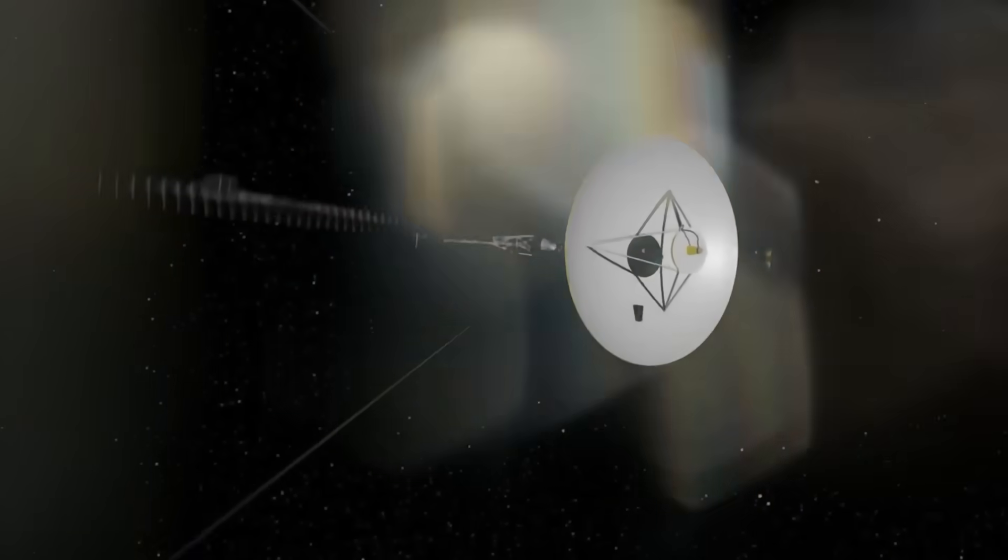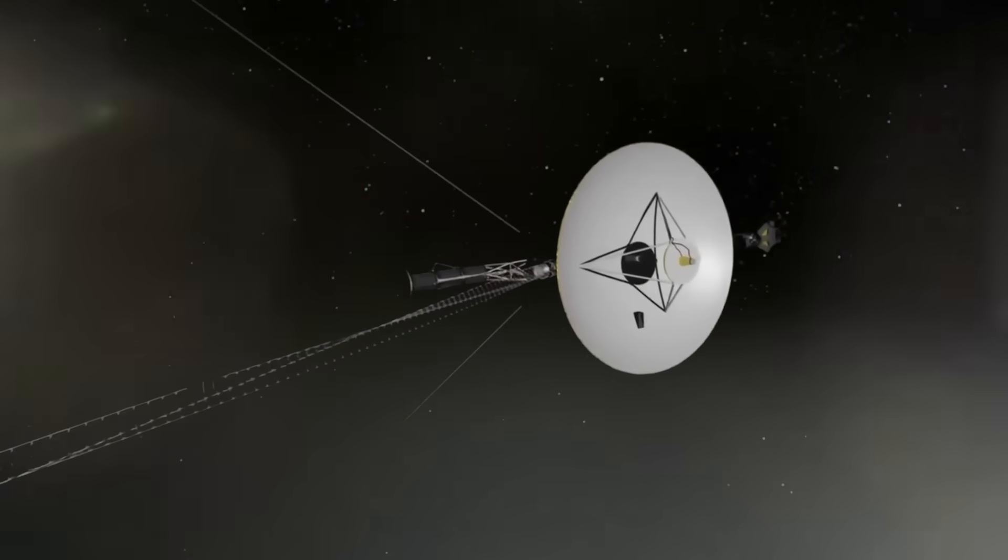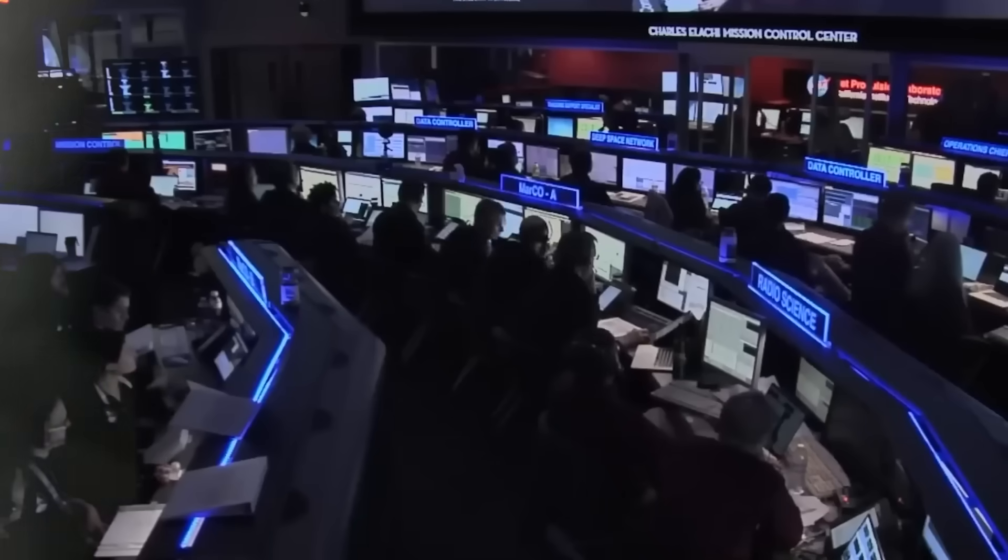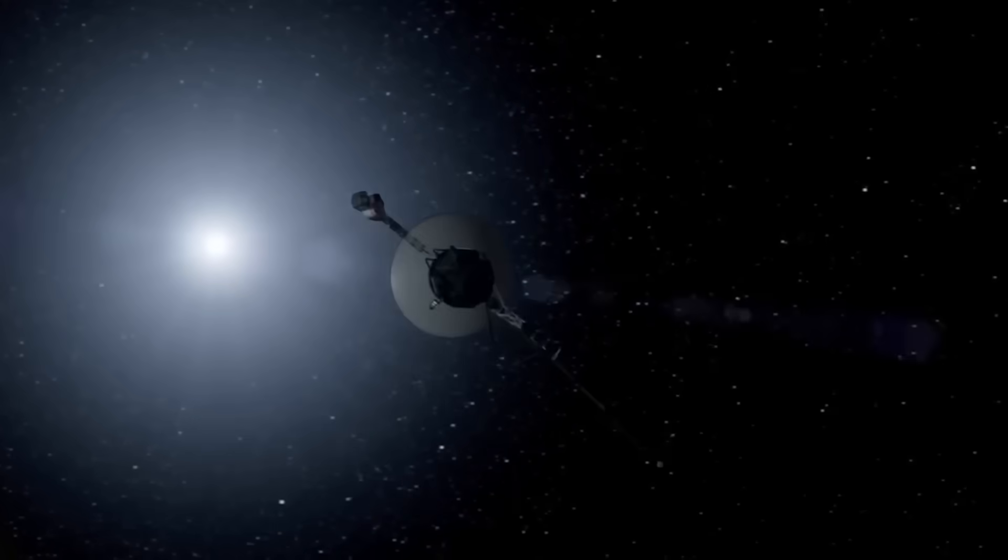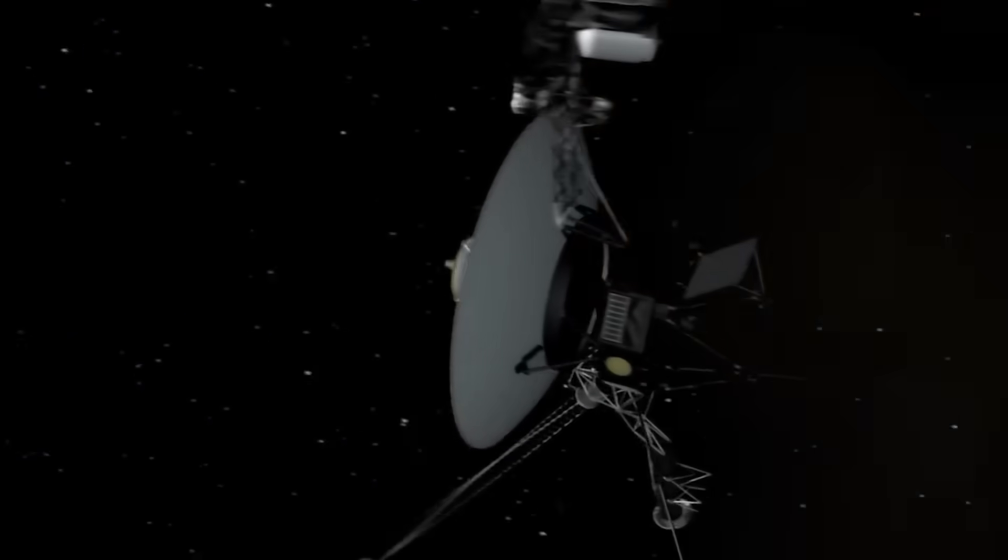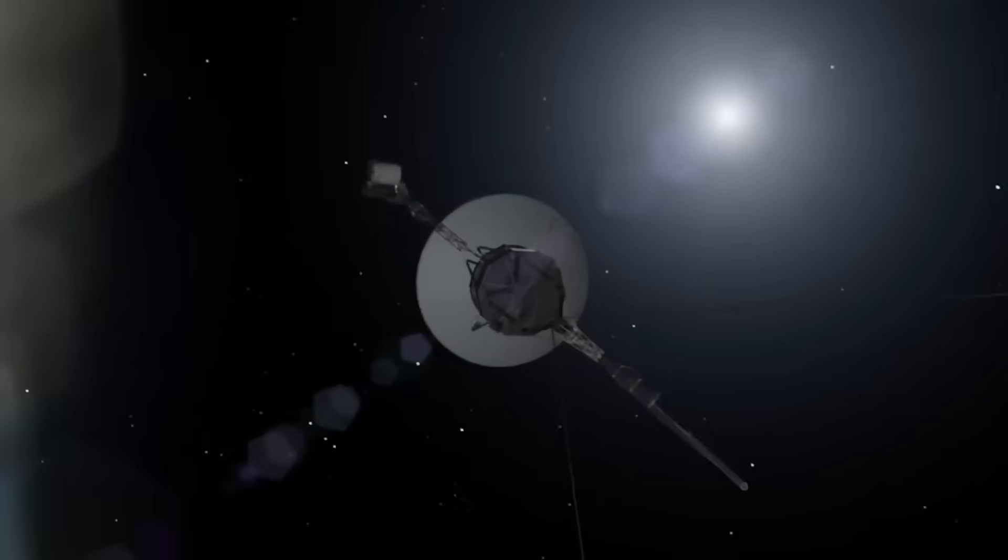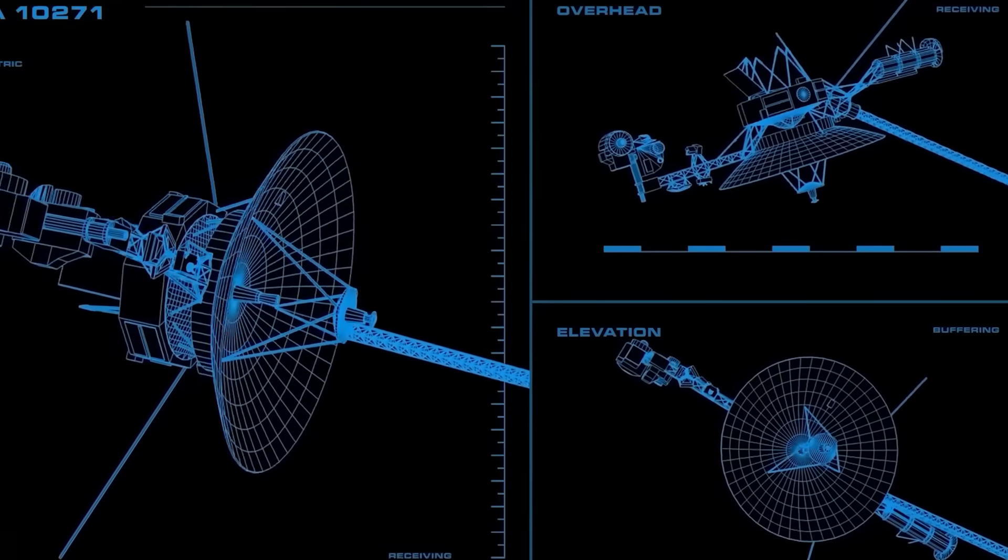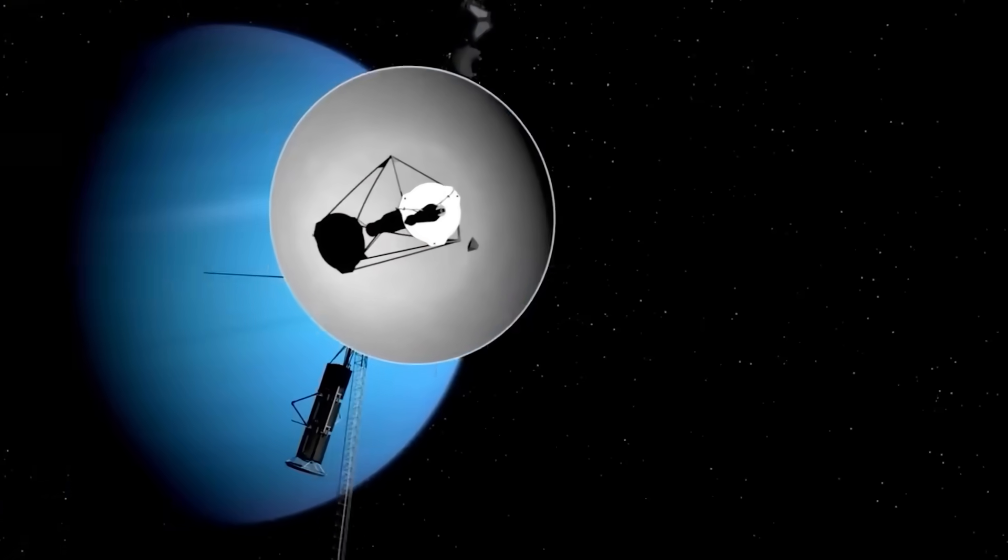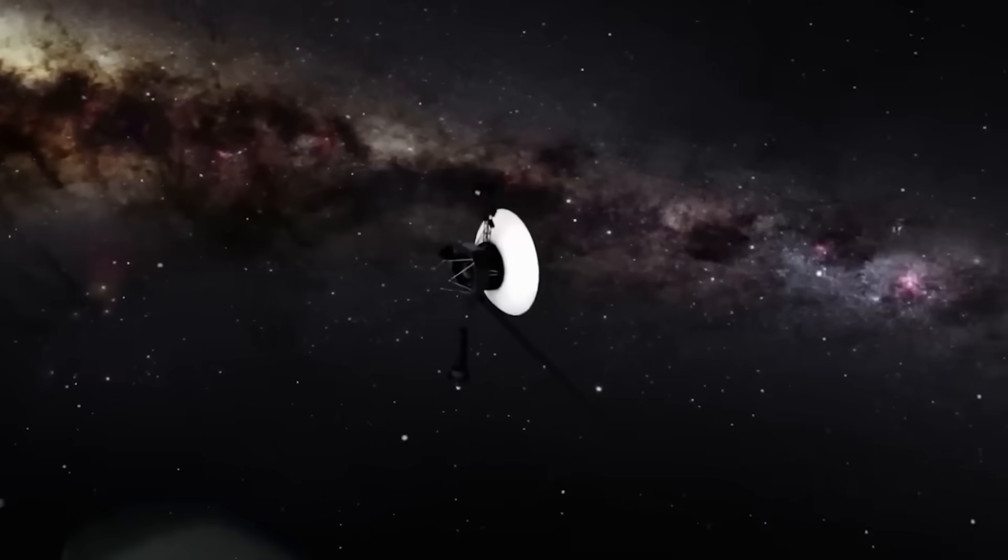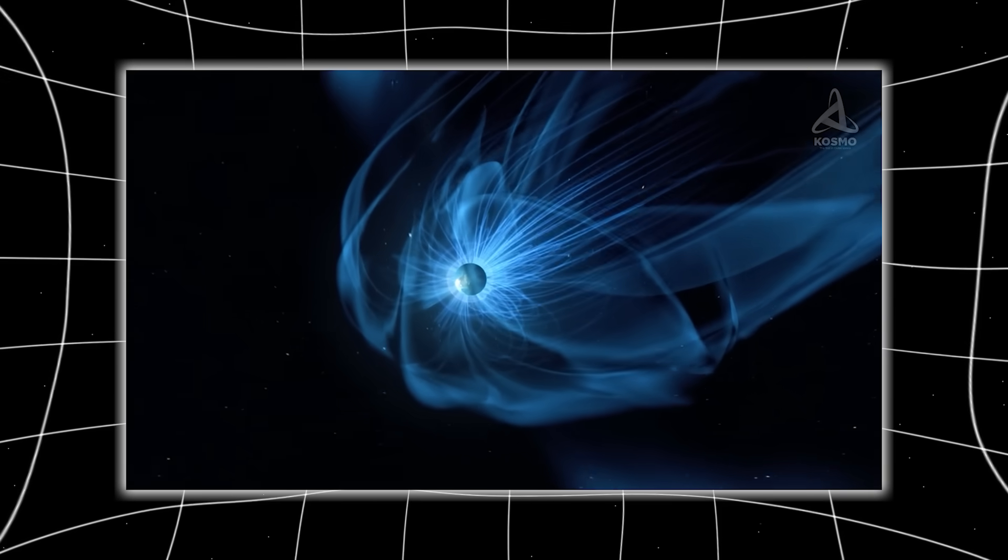On day 49 of continuous monitoring, the object did something that sent an undeniable chill through every scientist watching. It stopped. Not decelerated. Not drifted. Stopped, as if aware that it had been fully discovered. Then, over the next 17 hours, it began a series of micro-movements that formed a tight spiral. Not unlike a Lissajous figure, the same kind of pattern we used to stabilize orbital observatories. That might sound random to the public, but to engineers and physicists, it screamed of calibration.